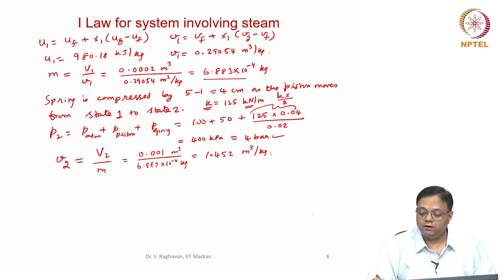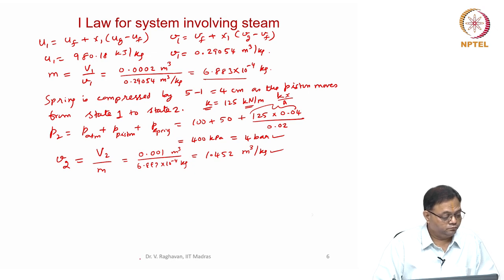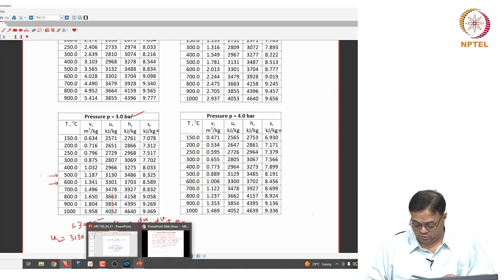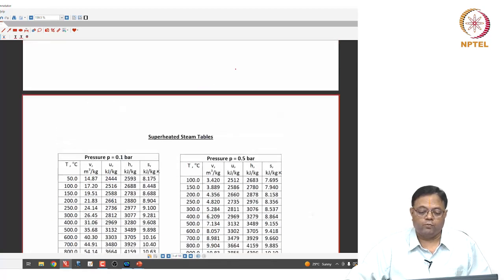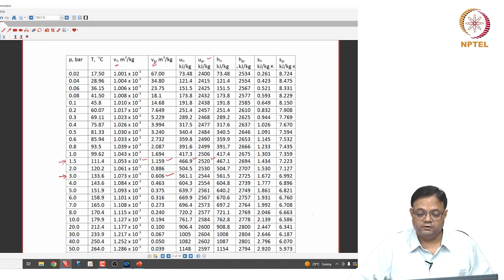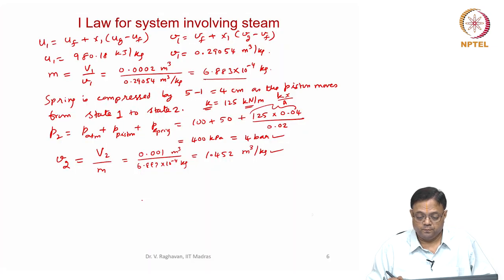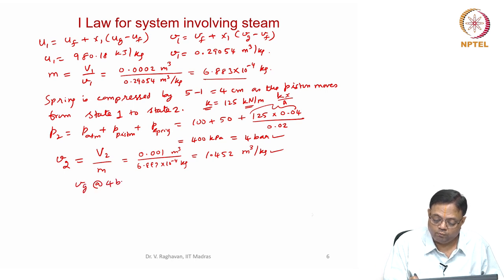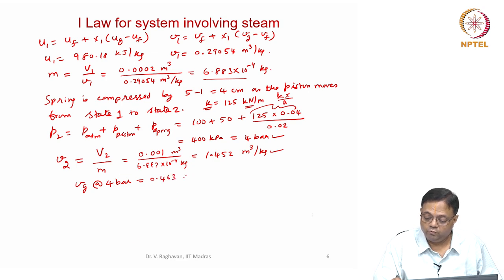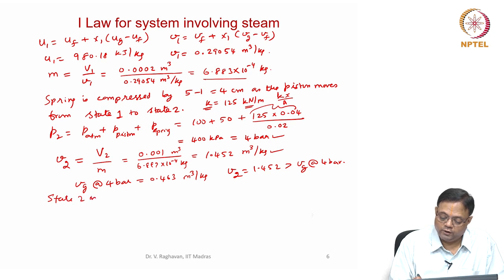Checking the saturation tables at 4 bar: Vg = 0.463 m³/kg. Since v2 = 1.452 > Vg at 4 bar = 0.463, state 2 is superheated. We go to the superheated steam tables for 4 bar.